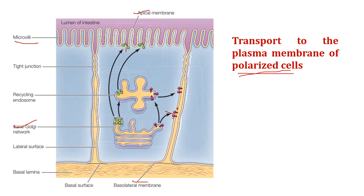Proteins headed to the apical domain are directed by signals involving GPI anchors and carbohydrate modifications rather than amino acid sequences. Tight junctions between neighboring cells maintain the identity of the apical and basolateral membranes by preventing diffusion of proteins between these two domains.